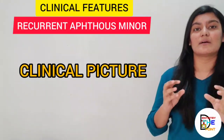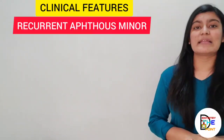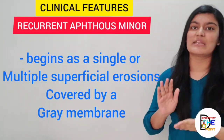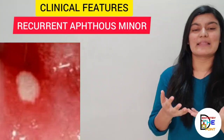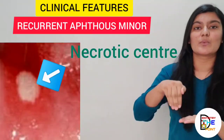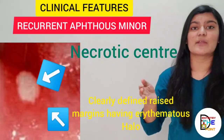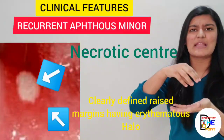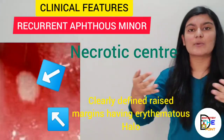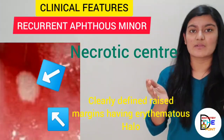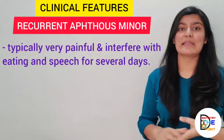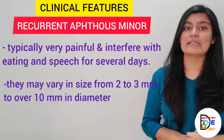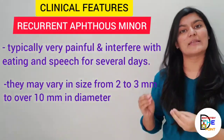Clinically, Recurrent Aphthous Minor first develops as a single or multiple superficial erosion covered by a gray membrane. Later, the lesion develops with a necrotic center surrounded by raised, regular margins with an erythematous halo. The ulcers are very painful, interfering with eating, swallowing, and speech.